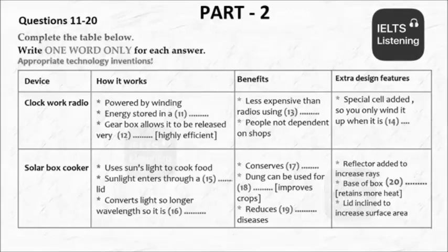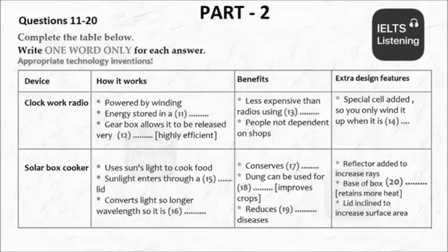So we'll then move on to the solar box cooker. Let's keep the description of the mechanism very simple. We need to say that it uses sunlight rather than conventional fuels to cook food. But we also need to explain two elements of why it's so efficient: the fact that the sun's rays enter through a plastic cover — not glass, according to my research — and then light is transformed into heat, and because it has a longer wavelength means that it gets trapped. And so it cooks the food.